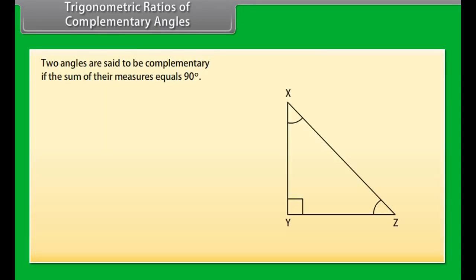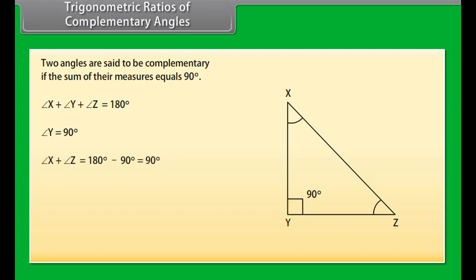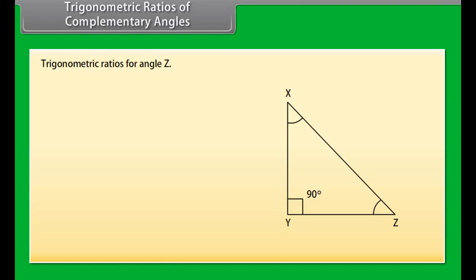Trigonometric ratios of complementary angles. Two angles are said to be complementary if the sum of their measures equals 90°. Consider triangle XYZ right-angled at Y. Since angle X + angle Y + angle Z = 180° and angle Y = 90°, we get angle X + angle Z = 90°, which implies angle X = 90° − angle Z, or simply X = 90° − Z. Let us list the trigonometric ratios of angle Z.